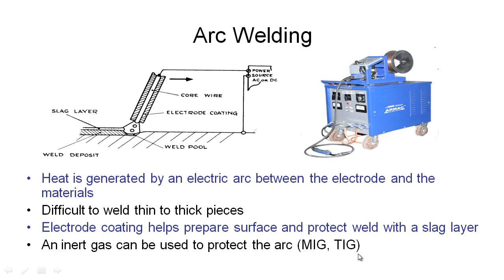TIG is another option, but in TIG we don't have the reel of wire constantly fed to the gun. Instead, we have a tungsten electrode to sustain the arc — it's not consumed — and then we periodically dab in filler rod if needed as we go, with argon gas shielding the whole process. It's also quite common in industry to see robots performing these welding techniques in modern mass production.